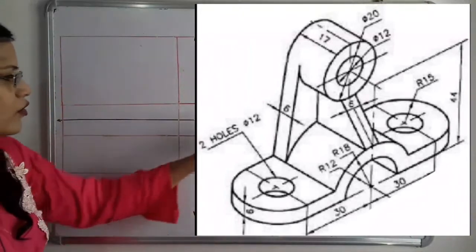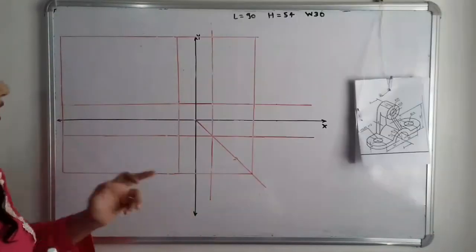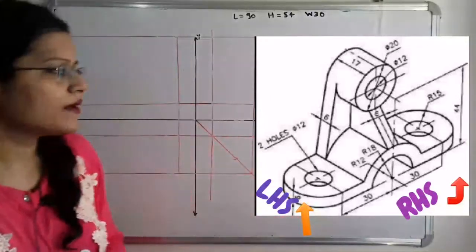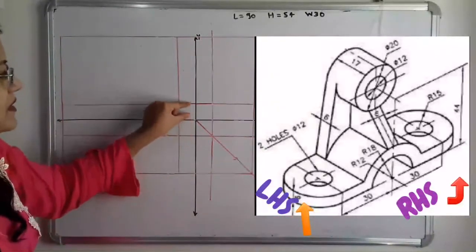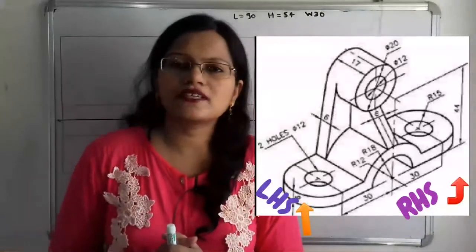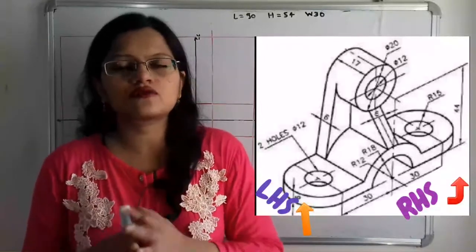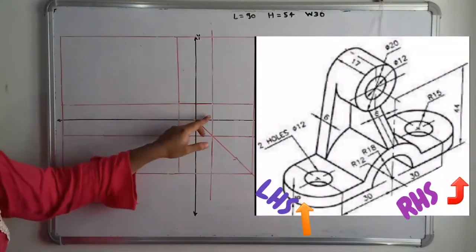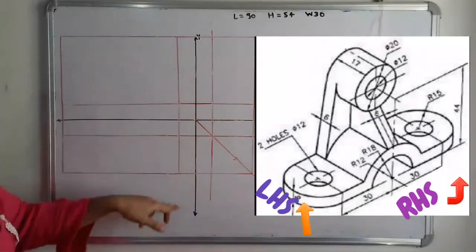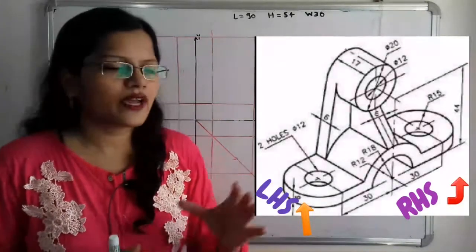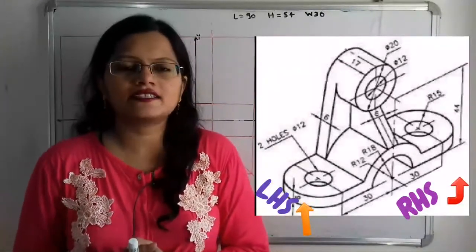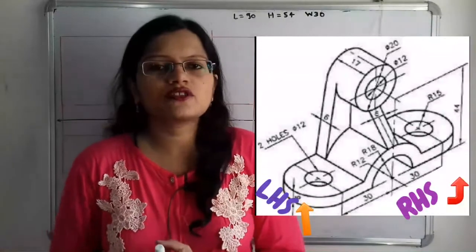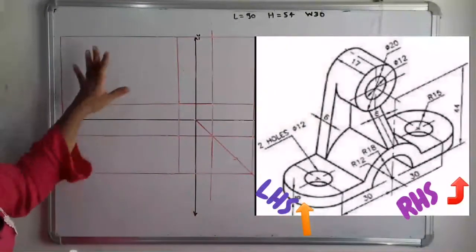To plot the orthographic projection, we take a horizontal line as the x-axis and a vertical line as the y-axis. There should be sufficient distance between the front view, top view, and side view. We keep some space above and below the x-axis and on both sides of the y-axis — this space should be constant, for example 1 centimeter or 2 centimeters. We select points 1 centimeter on both sides of the x and y-axis and keep lines parallel to each axis. The front view is on the right hand side of the object, so we plot the front view on the left hand side.